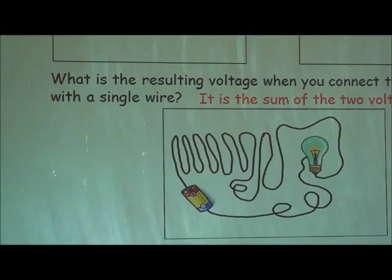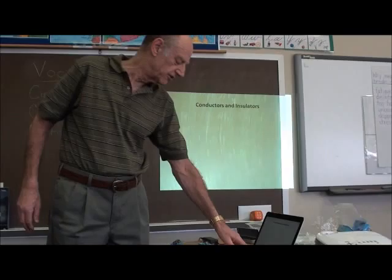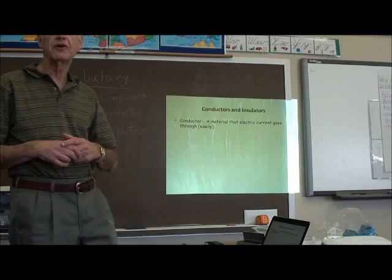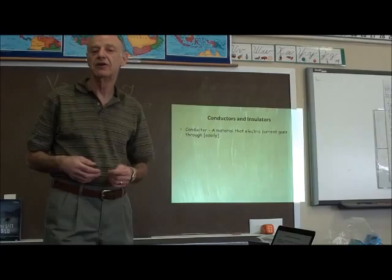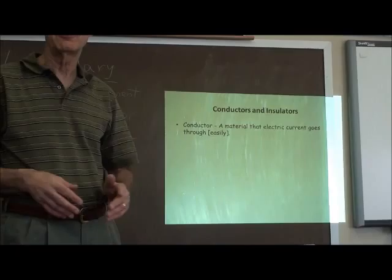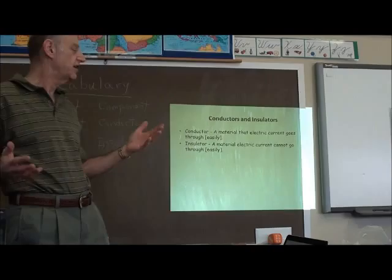Then I make sure they understand about conductors and insulators. I define a conductor as anything that electricity will flow through easily. I point out that electricity can go through air if there's enough, but that's not really enough to count as a conductor. We would consider that an insulator, which is any material that electricity cannot go through easily.